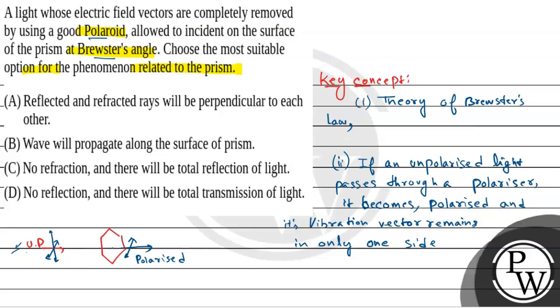Now, from option D, that is: no reflection and there will be total transmission of light. So, this is our correct answer. Hope you understand it. Thank you.